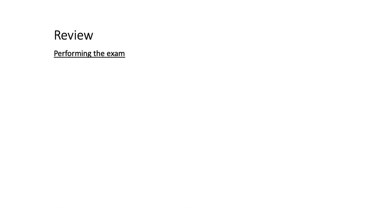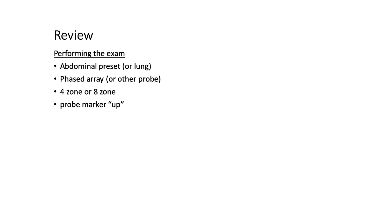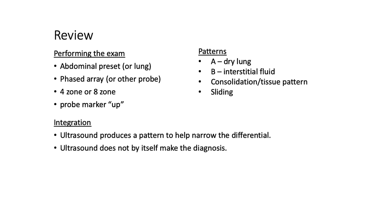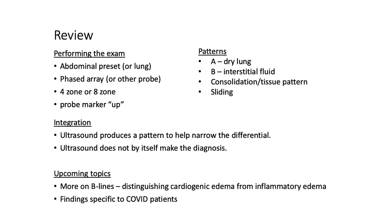To review on performing the exam: we recommend the abdominal preset with a phased array probe, four- or eight-zone protocol, with the probe marker pointed up. The patterns include A, B, consolidation, sliding, and effusions. Remember that ultrasound produces a pattern to help narrow the differential, but does not by itself make the diagnosis. Upcoming topics will cover B lines and distinguishing cardiogenic edema from inflammatory edema, as well as findings specific to COVID-19 patients.